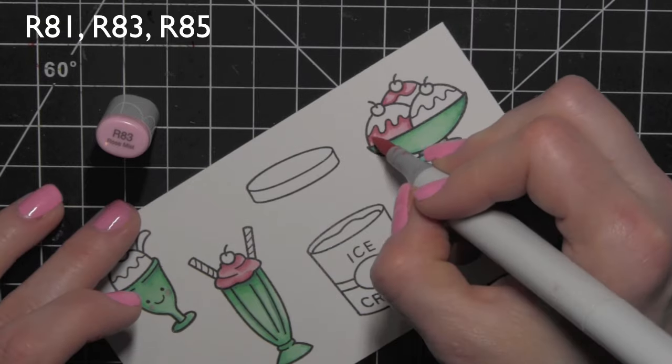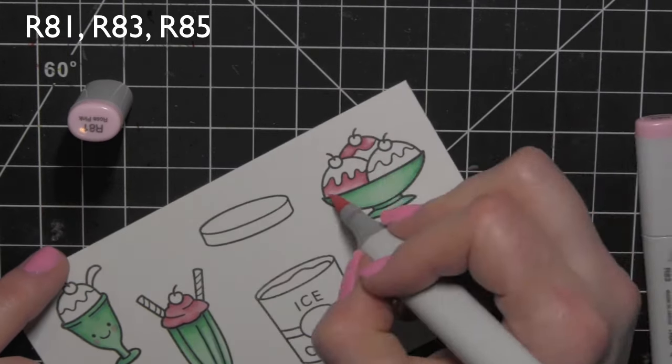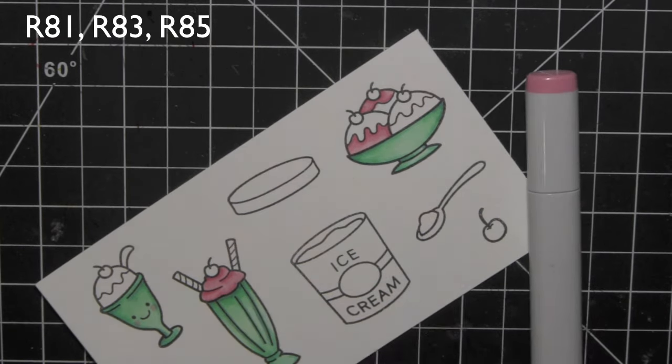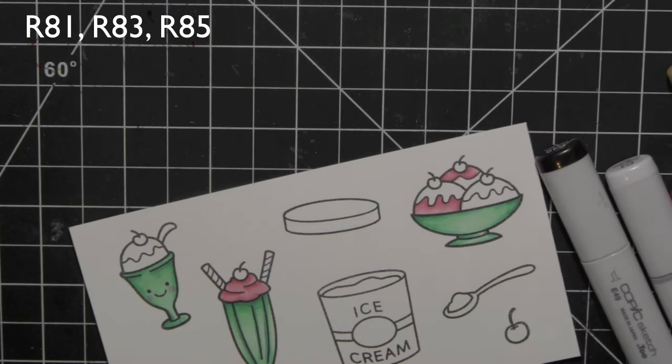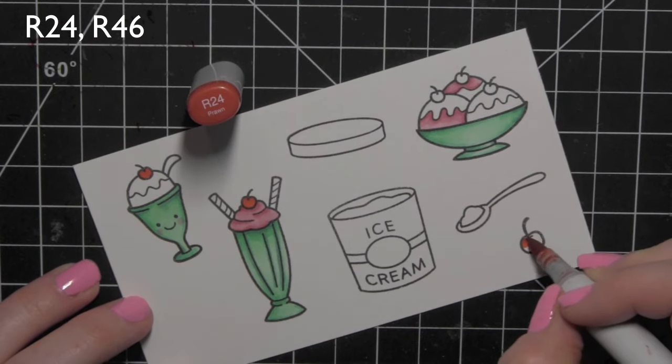My dark color is the highlight R85 and then blend it out a little with R83 and then back with R81 if anything is too dark. If it's too dark and you need to lighten it, or if you blend it too much, you can go back with your dark colors as well.